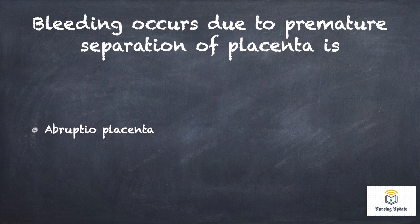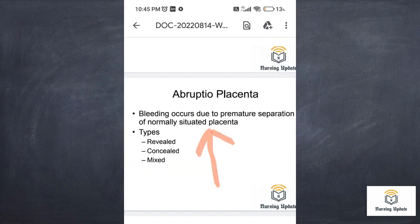Bleeding that occurs due to premature separation of placenta is known as abruptio placentae. This is a direct MCQ. Full term: bleeding due to premature separation of normally situated placenta — the answer is abruptio placentae. You can verify that in the notes.